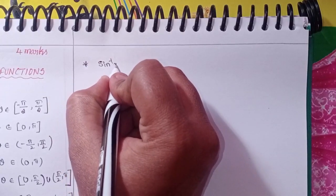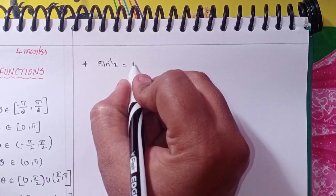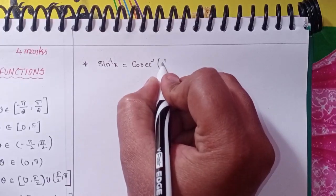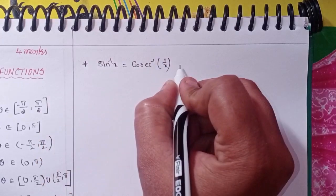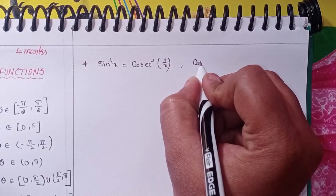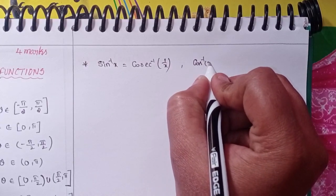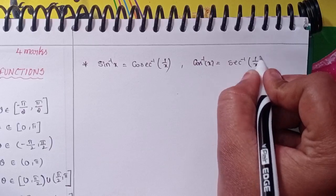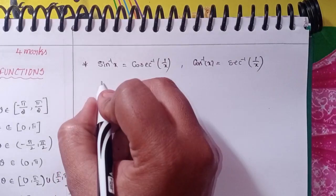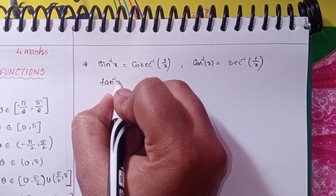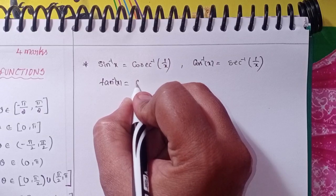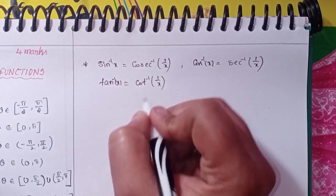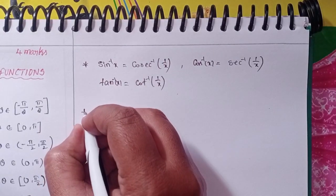Next set of formulas: sin⁻¹(x) = cosec⁻¹(1/x). cos⁻¹(x) = sec⁻¹(1/x). tan⁻¹(x) = cot⁻¹(1/x).